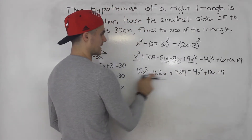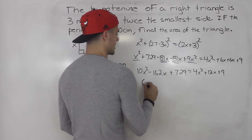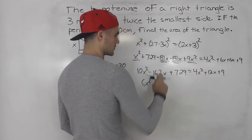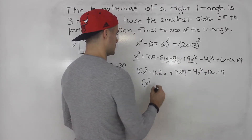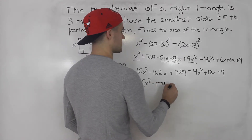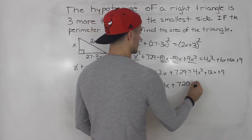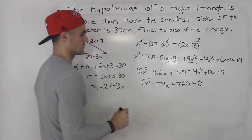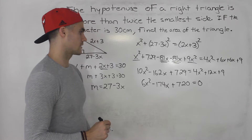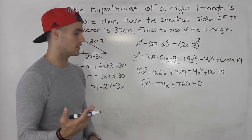Bringing everything over to the left side: 10x squared minus 4x squared gives 6x squared. Negative 162x minus 12x gives negative 174x. And 729 minus 9 gives positive 720. So we have 6x squared minus 174x plus 720 equals zero. This is a quadratic equation — you could plug it into the quadratic formula, but I think this is actually going to factor smoothly.